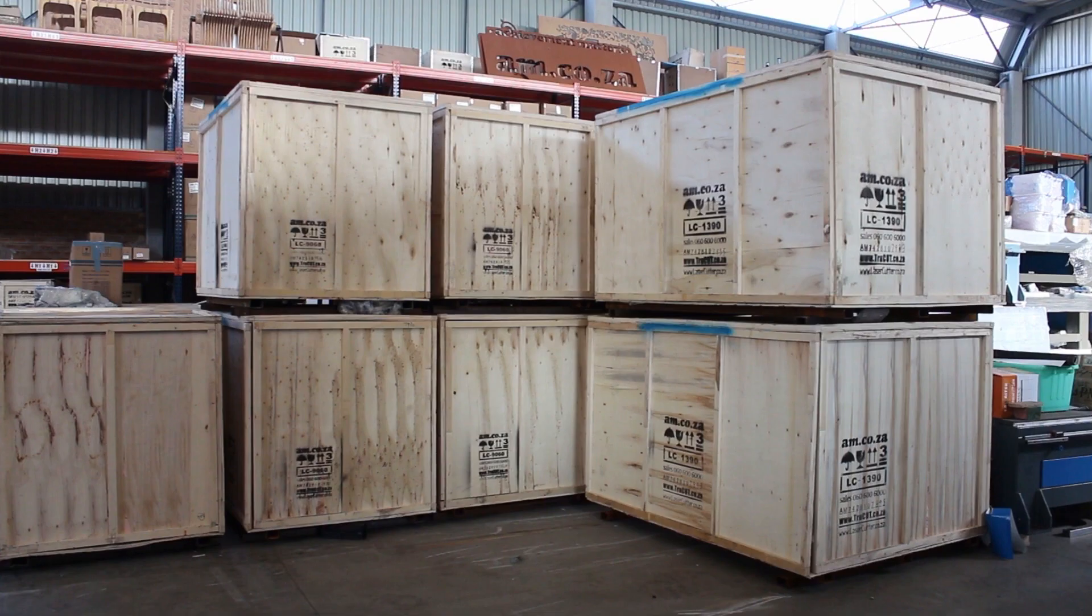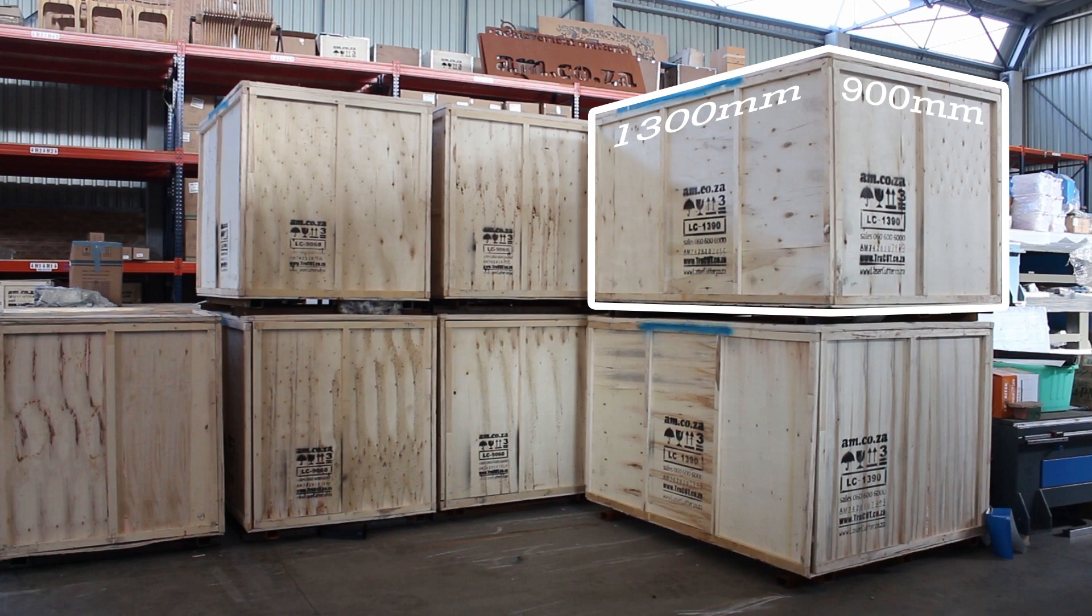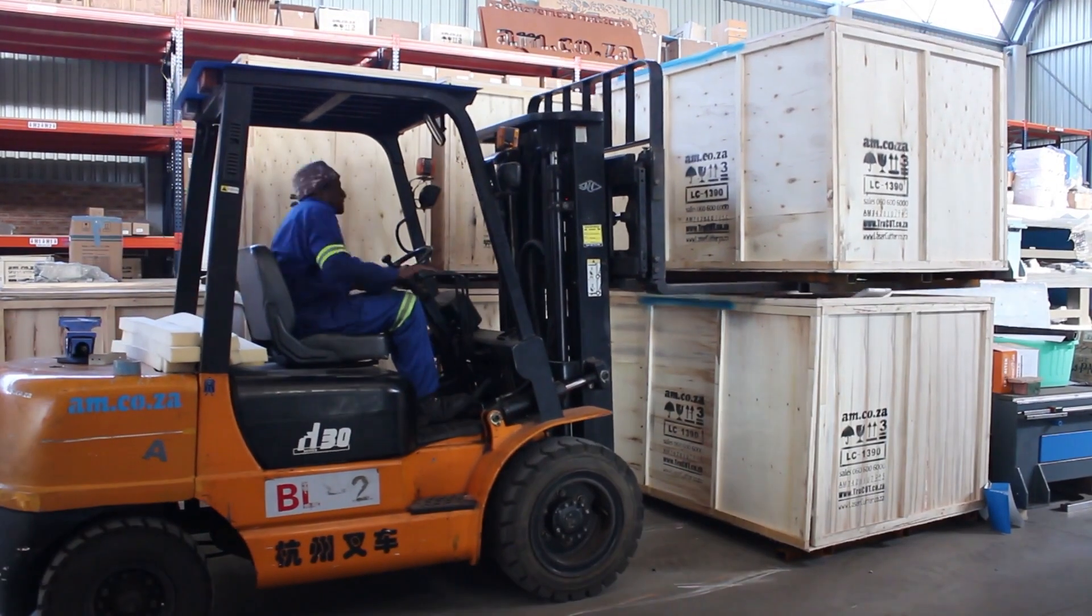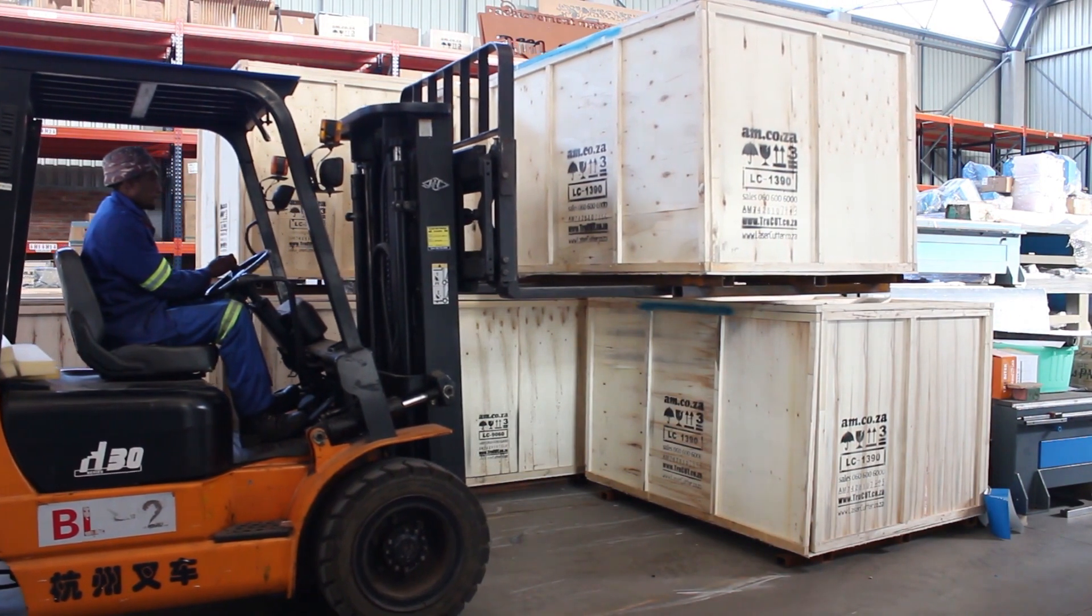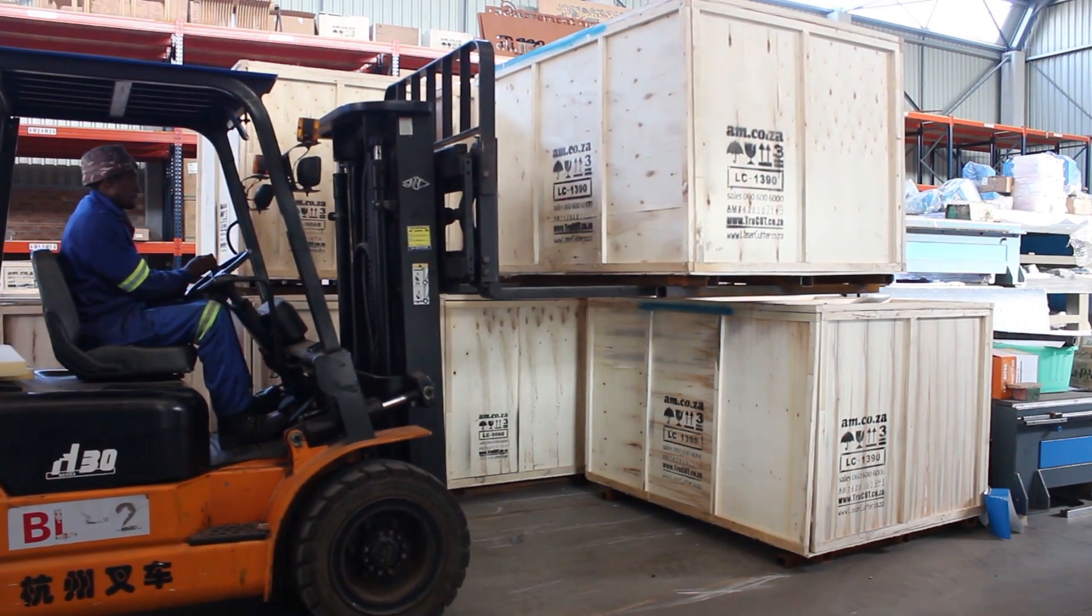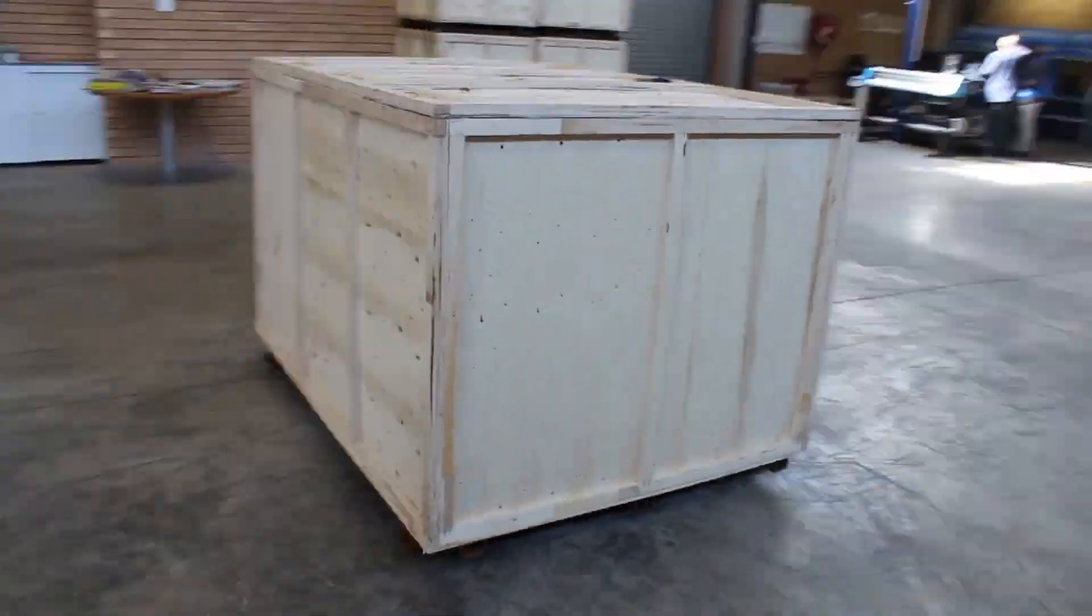This is our 1.3 meter by 900 millimeter cabinet laser cutting machine, standard range bare bone unit in a crated box. All units are packaged and transported to our clients in these specially designed crated boxes. Now let's open the box and see what's inside.